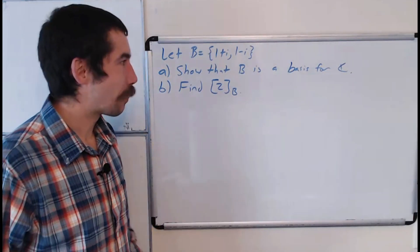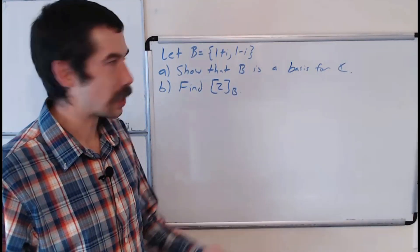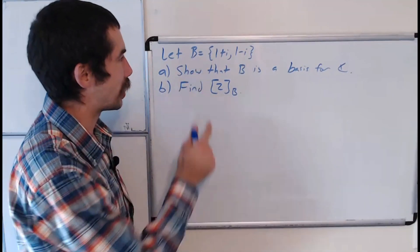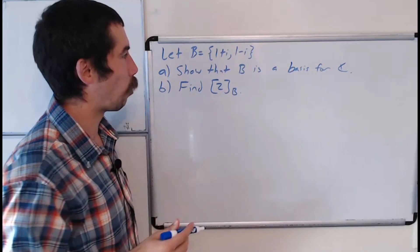Happy learning! Today we have a few questions about the vector space of complex numbers, which we denote by ℂ. So let B be the set {1+i, 1-i}.